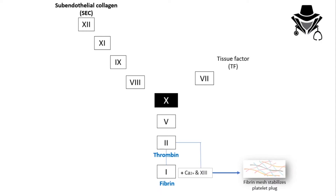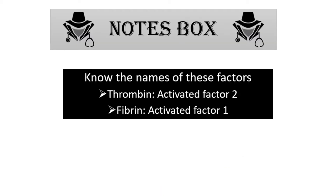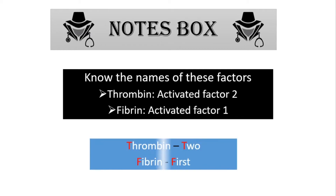For all these coagulation factors, we only need to know the numbers — but there are two factors we should know by name: thrombin, which is activated factor 2, and fibrin, which is activated factor 1. An easy way to memorize them: the T in thrombin matches the T in two, and the F in fibrin matches the F in first.